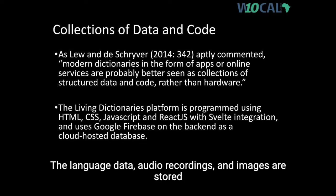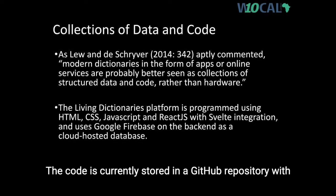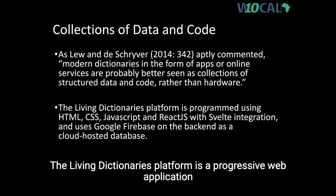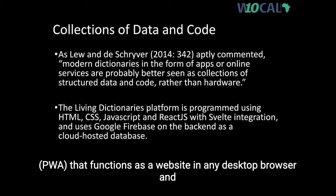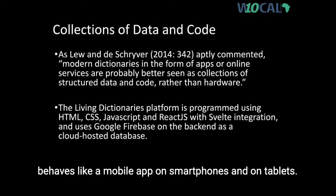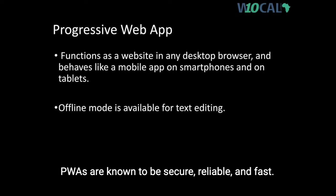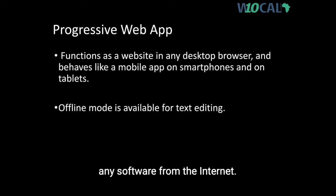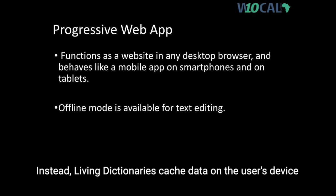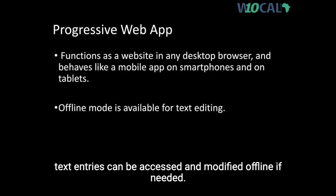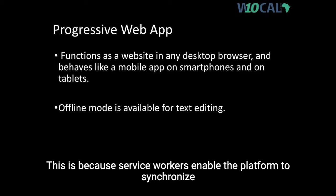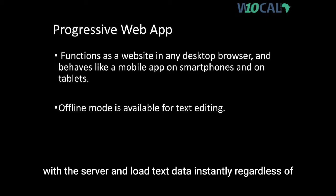The language data, audio recordings, and images are stored in the cloud. The code is currently stored in a GitHub repository with plans to make it open source in the future. The Living Dictionaries platform is a progressive web application (PWA) that functions as a website in any desktop browser and behaves like a mobile app on smartphones and tablets. PWAs are known to be secure, reliable, and fast. Our platform does not require the user to download or install any software. Instead, Living Dictionaries cache data on the user's device, and text entries can be accessed and modified offline, with changes automatically uploaded to the cloud when the user is back online.